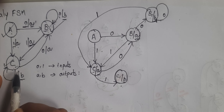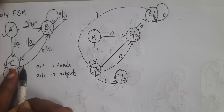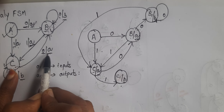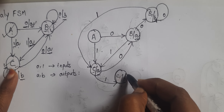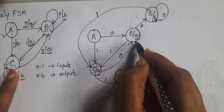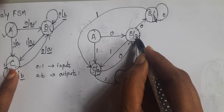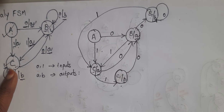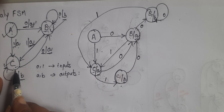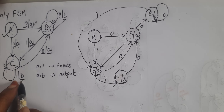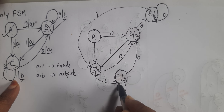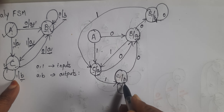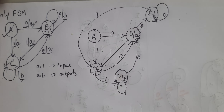For state c1, when the input is 0, it goes to state b with output a. For input 1, it remains in the same state with output b. So this is the complete Moore FSM.